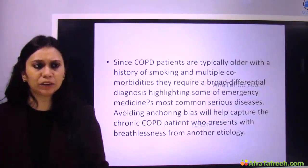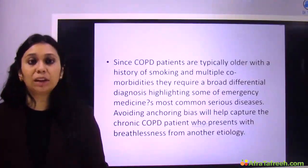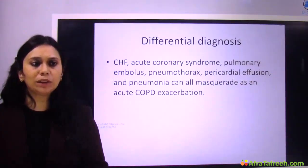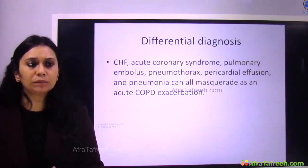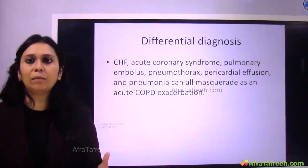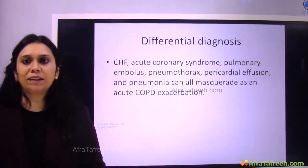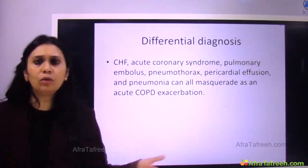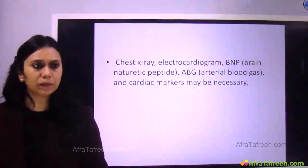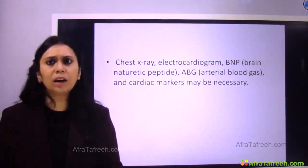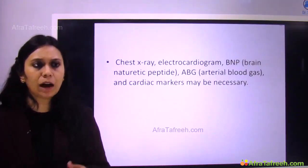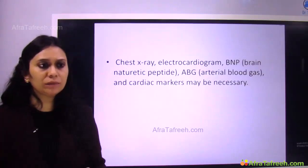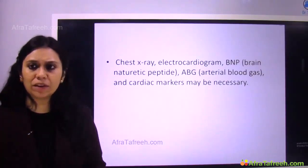All these conditions can masquerade the signs and symptoms of acute COPD exacerbation. So how do I rule out these conditions? There are a few investigations we can do, though none are diagnostic — chest X-ray, ECG. A BNP can be done to distinguish whether the dyspnea is because of a lung condition or heart condition. A serial ABG may be required, and cardiac markers may be necessary.